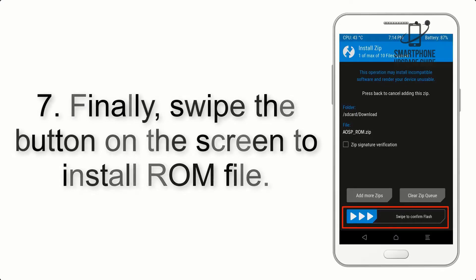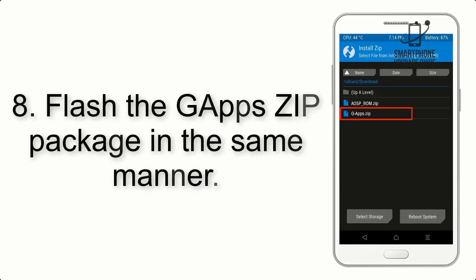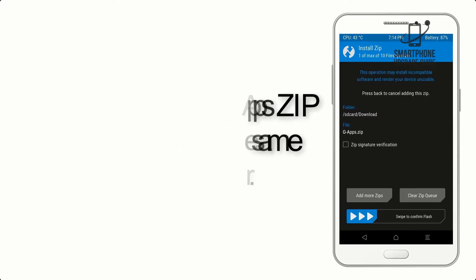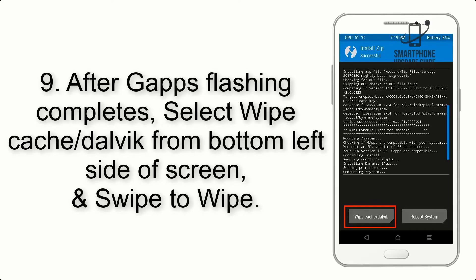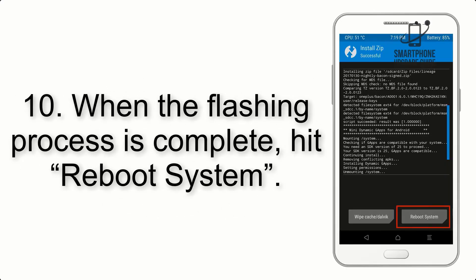Step 7: Swipe the button on the screen to install the ROM file. Step 8: Flash the GApps zip package in the same manner. Step 9: After GApps flashing completes, select Wipe Cache and Dalvik from the bottom left side of the screen and swipe to wipe.